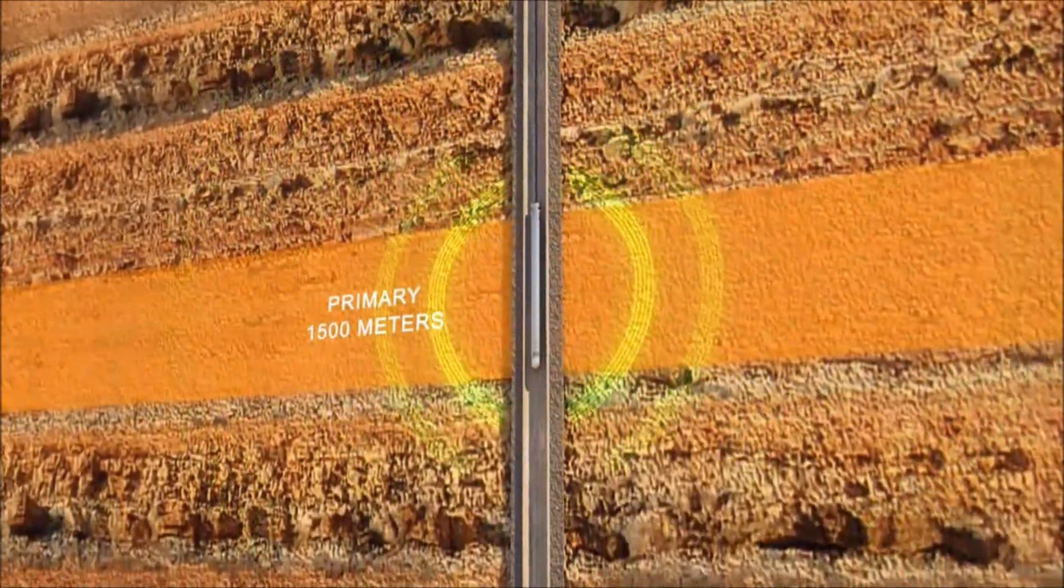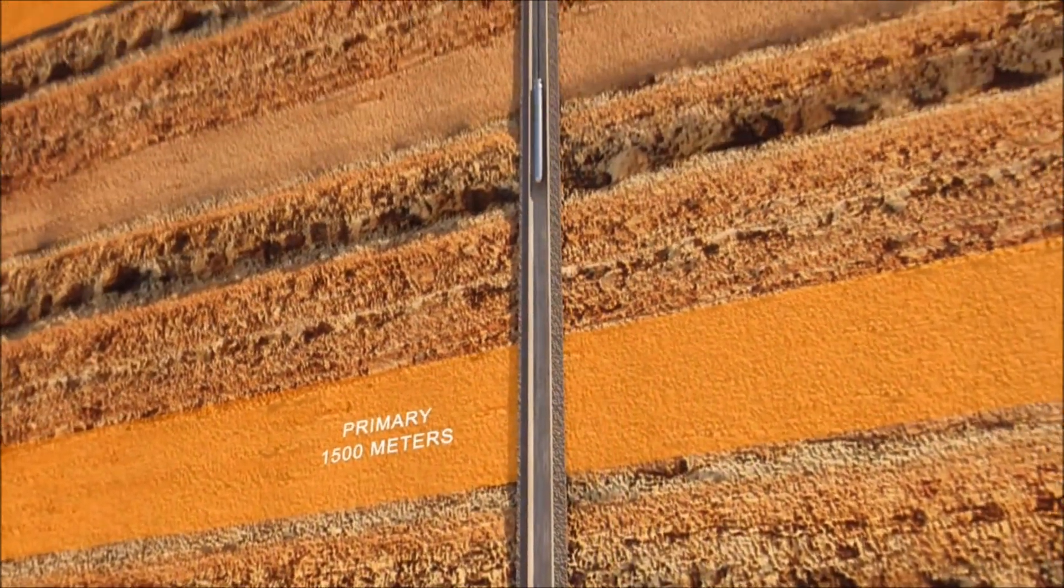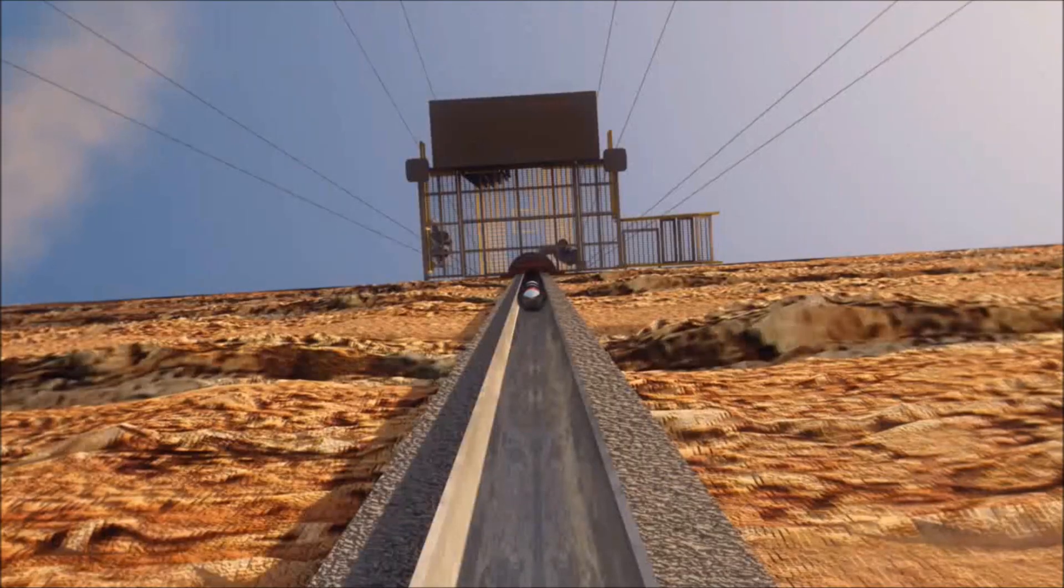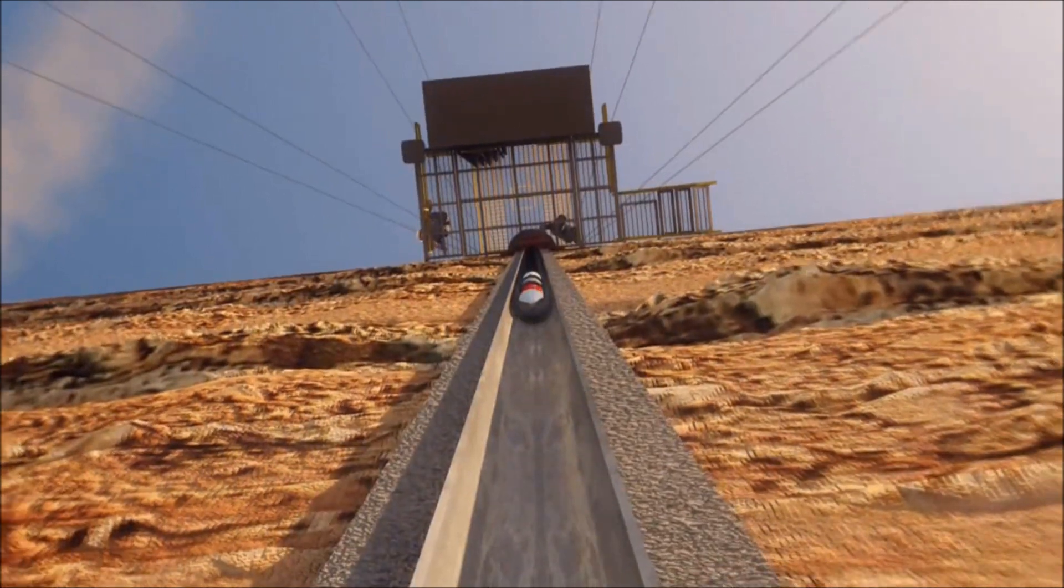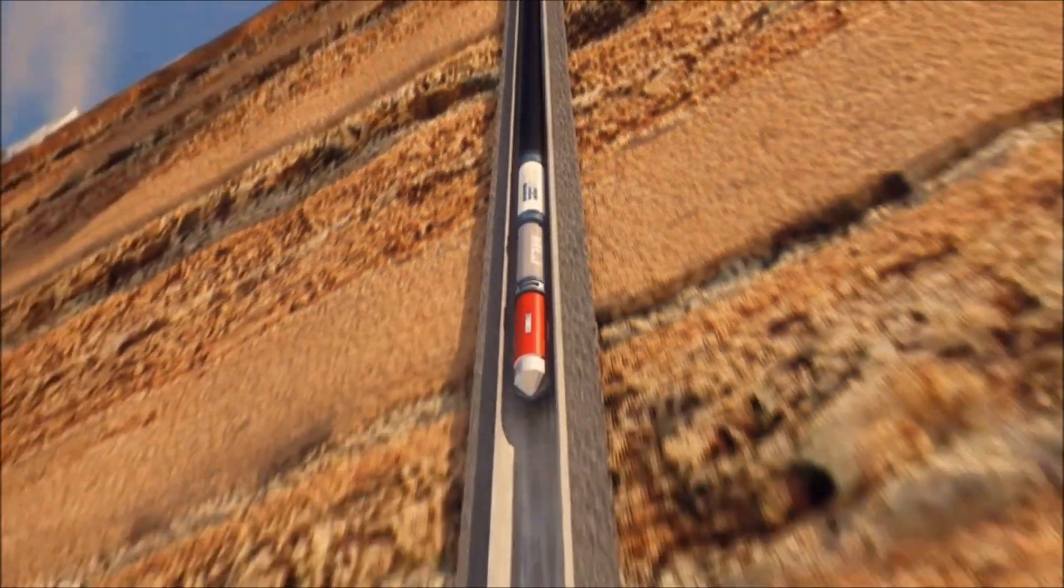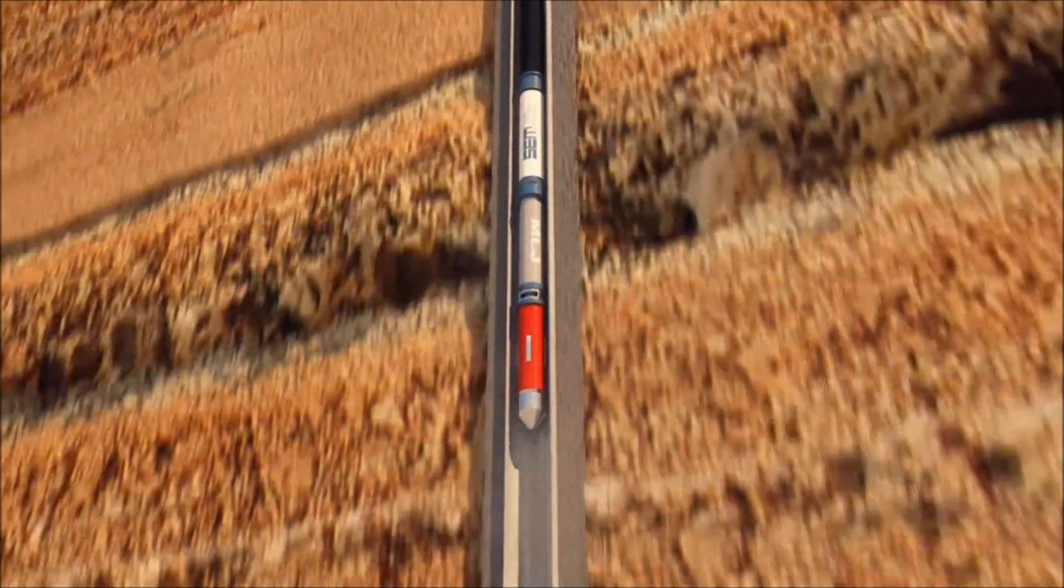The logging tool is retracted, and the Simjet tool string is positioned at the well. The Simjet tool is lowered down to the primary target zone, utilizing production tubing.